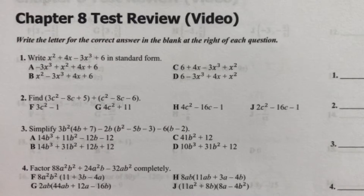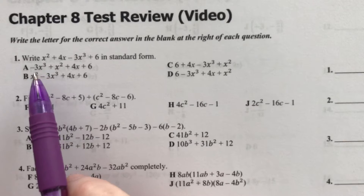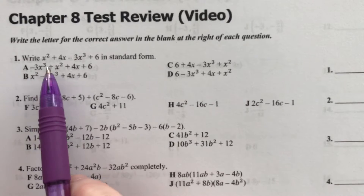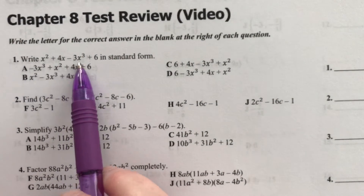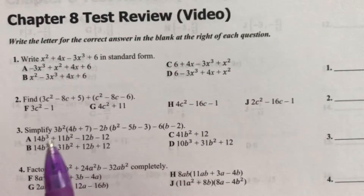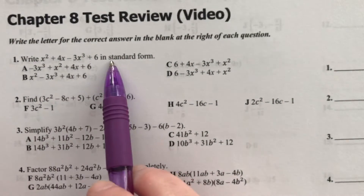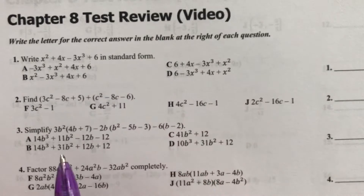All right, in this lesson we are going to be reviewing chapter 8, all about polynomials. So here, number 1: write x squared plus 4x minus 3x to the third plus 6 in standard form.